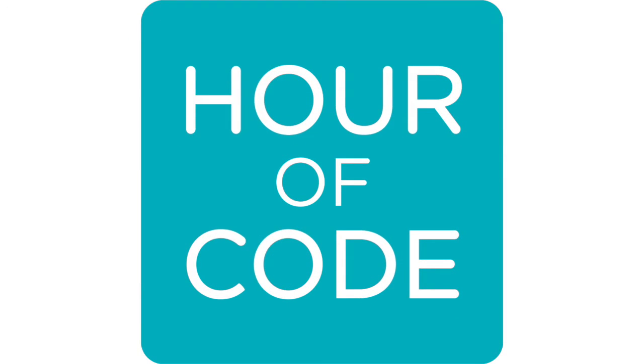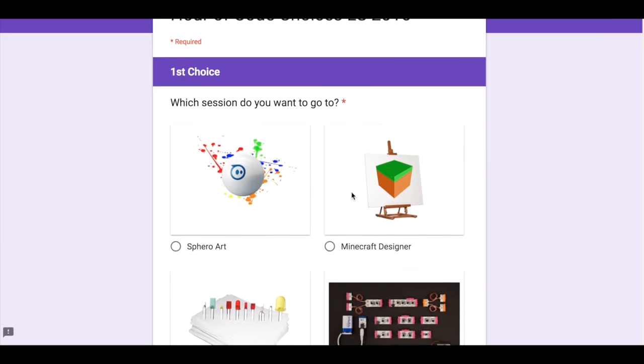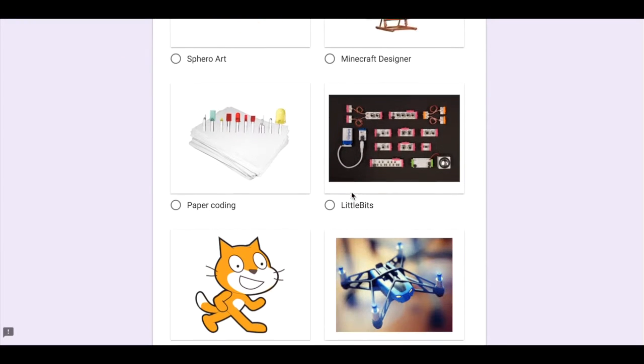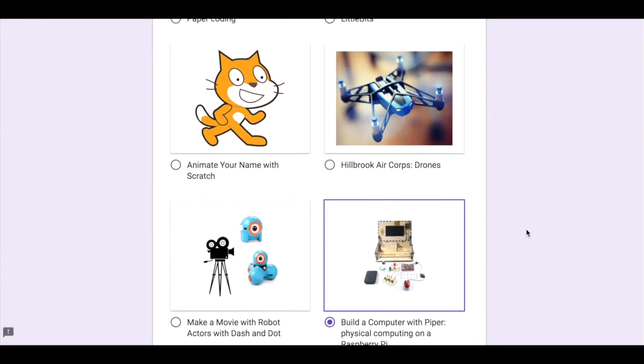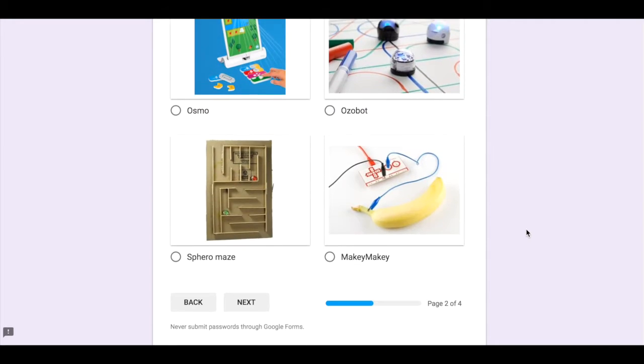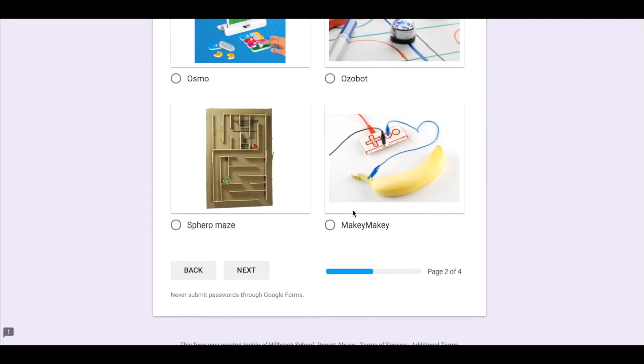Well, hi, Hillbrook students. Next week is Everyone Can Code. There are going to be 12 different stations going on as part of a World Wide Hour of Code. You'll get to go to two stations. Let me explain what your choices are, and then you are going to give us your top three choices.